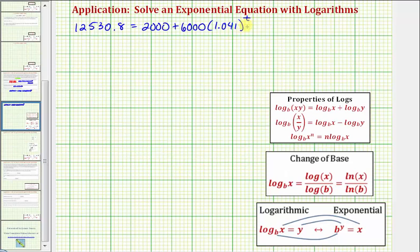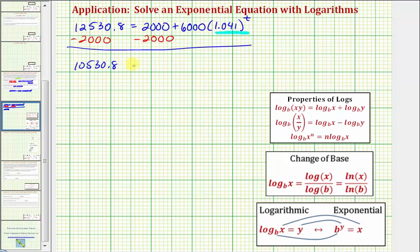We first want to isolate the exponential part of the equation. Meaning we want to isolate 1.041 raised to the power of T. So we'll begin by subtracting 2,000 on both sides of the equation. So this will give us 10,530.8 equals 6,000 times 1.041 raised to the power of T. And now for the next step, we'll divide both sides by 6,000.